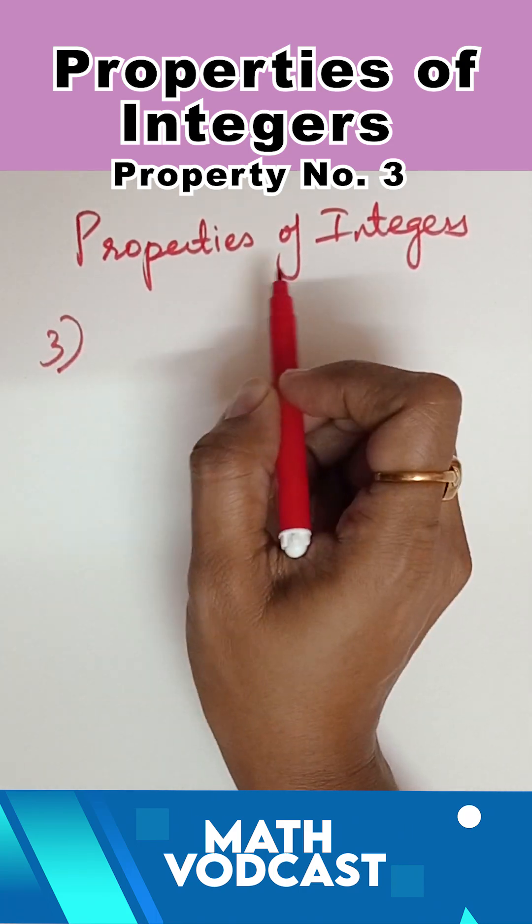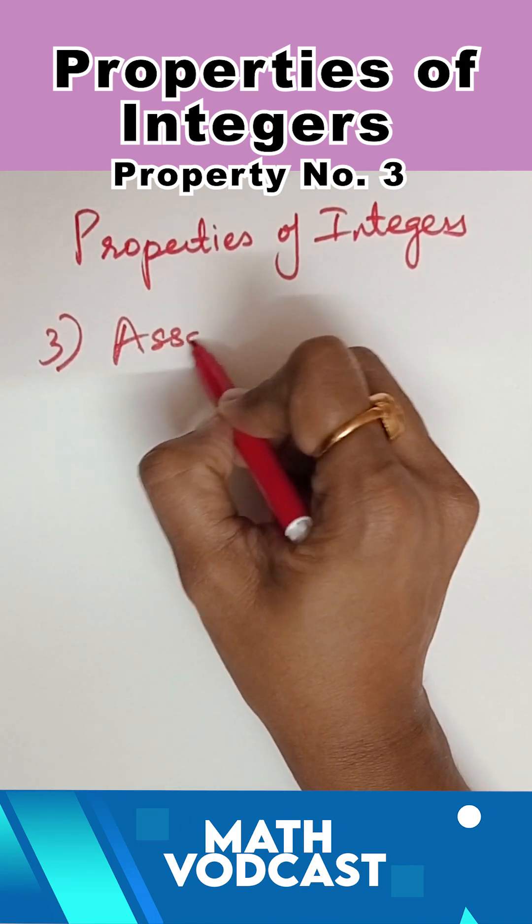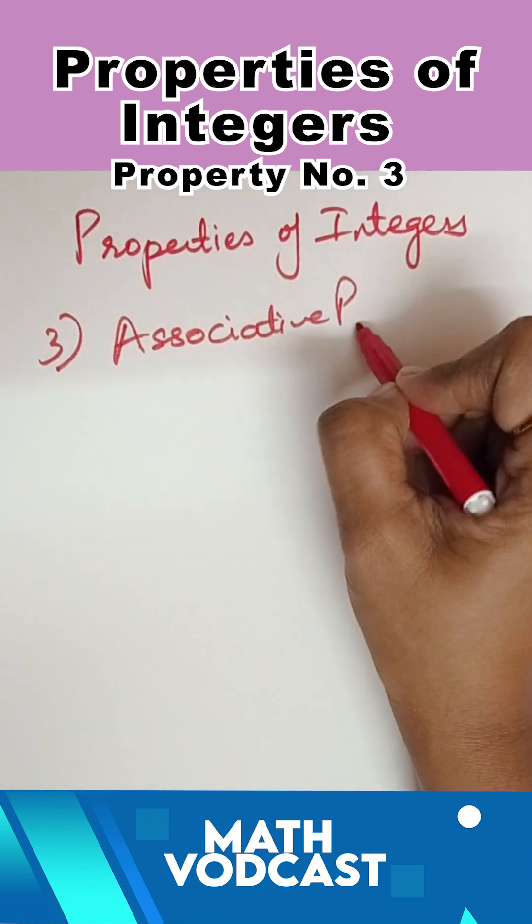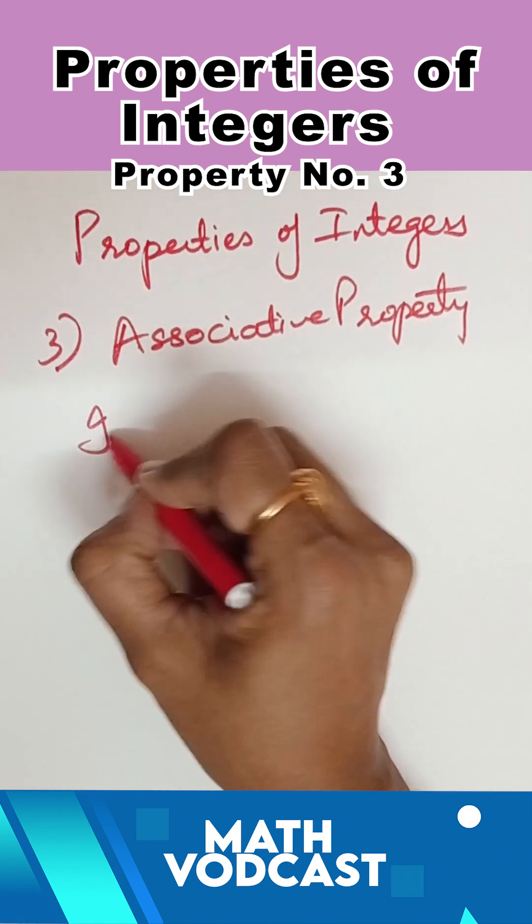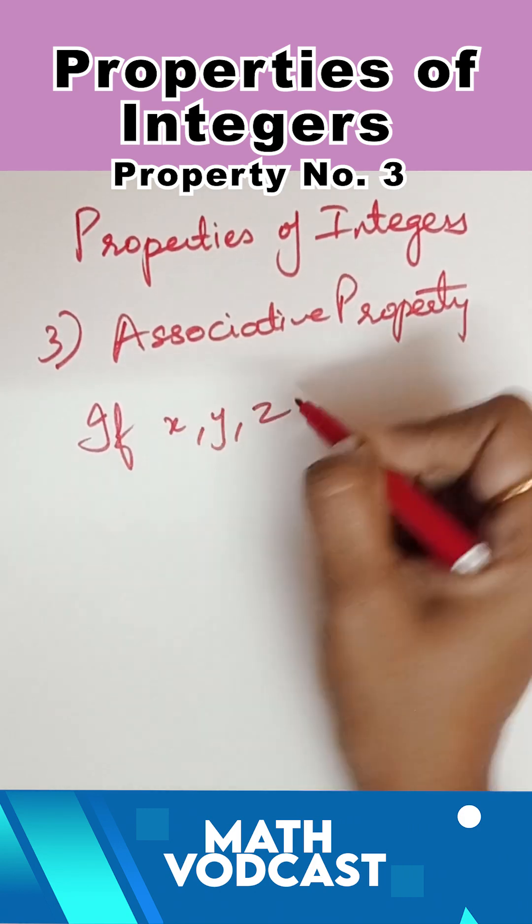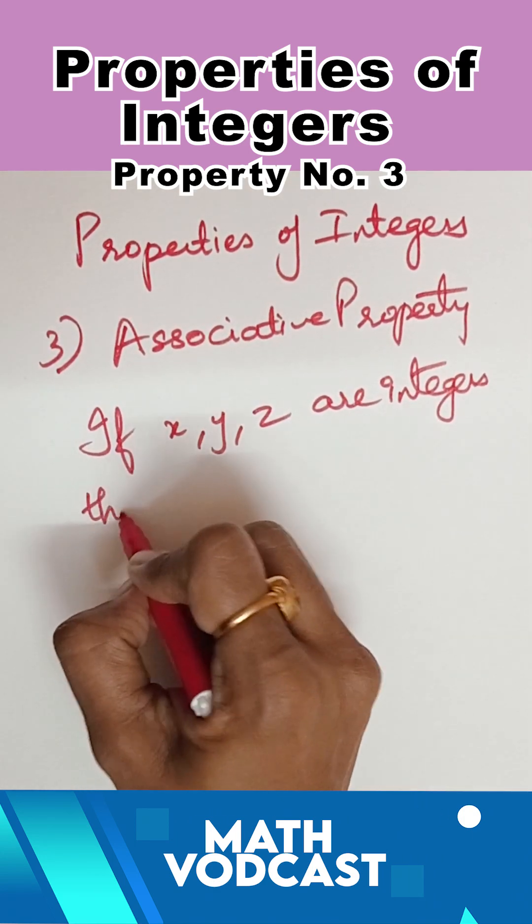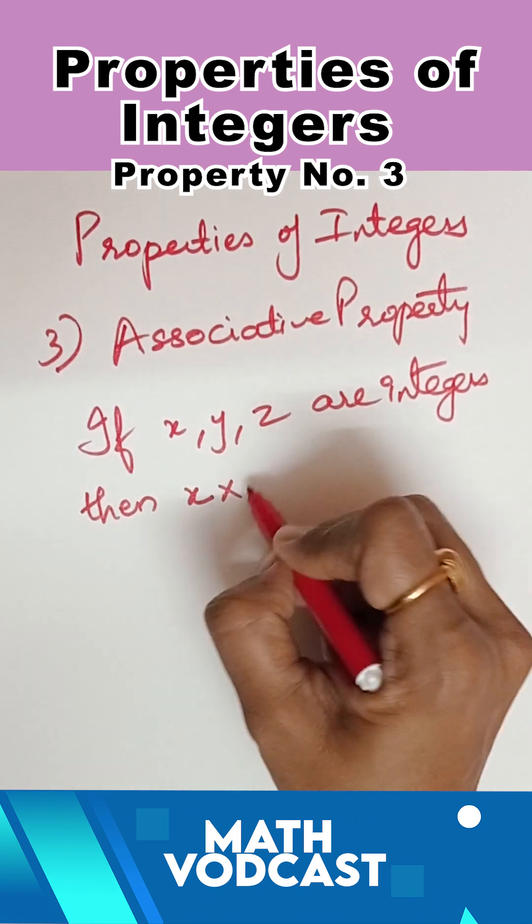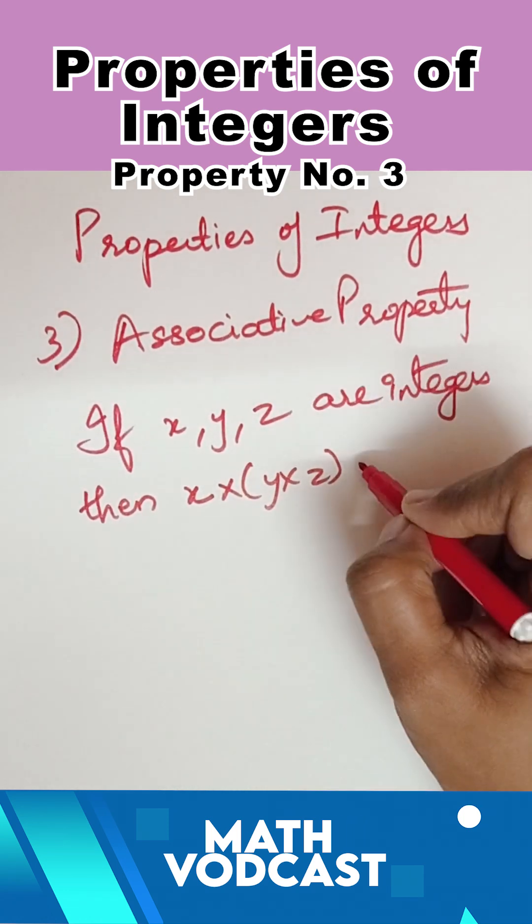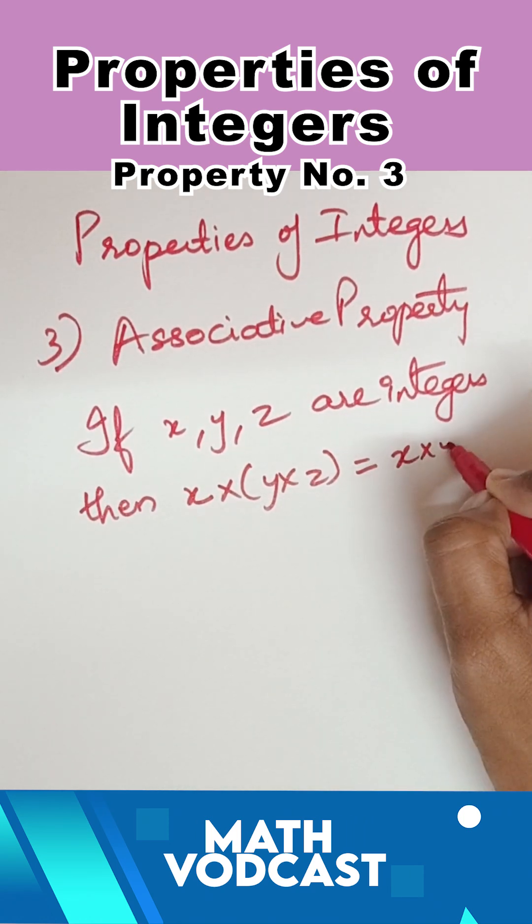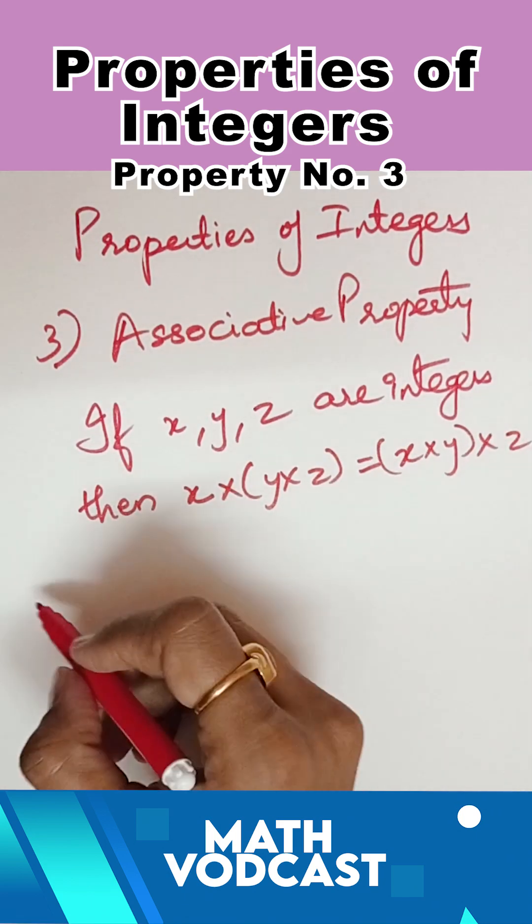Let's look at the third property of the integers which is associative property of integers. If x, y, z are integers then x into y into z equals x into y into z.